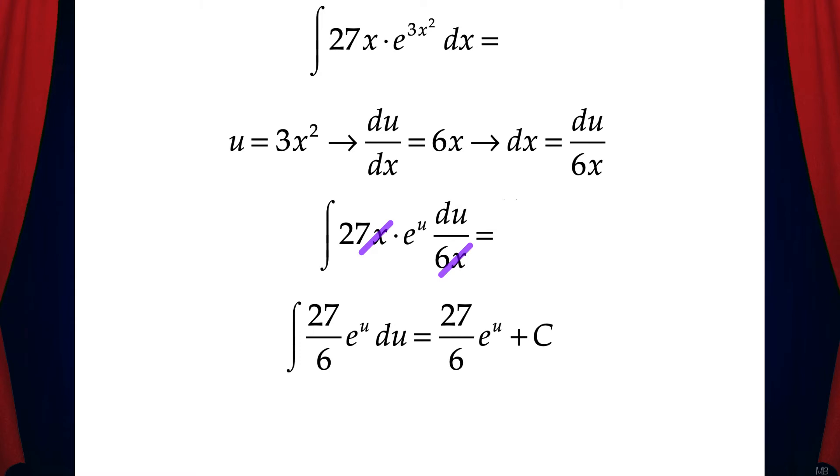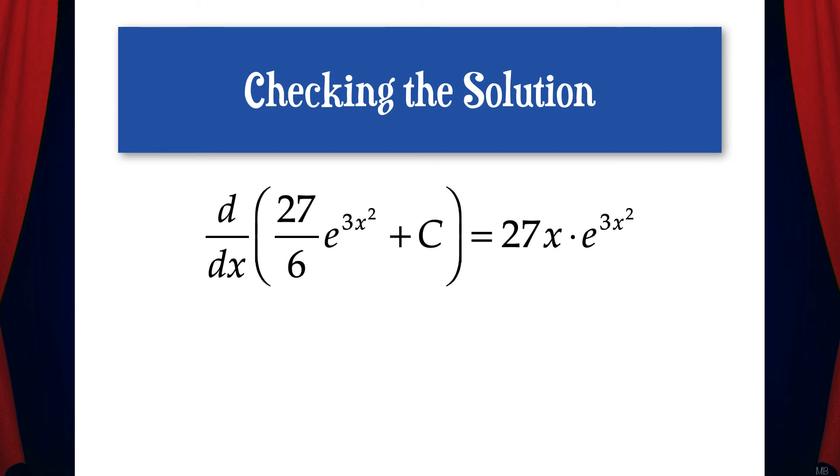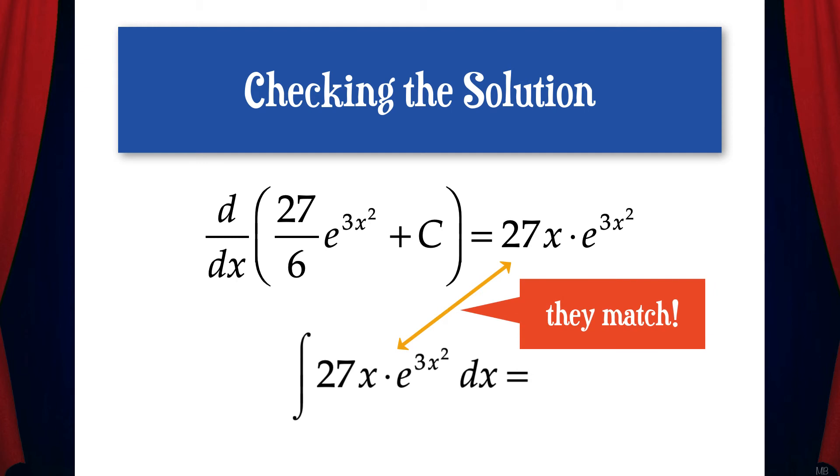Now let's get our solution back in terms of x. So in place of u, we'll write 3x squared. So our final solution is 27 over 6 e to the 3x squared plus c. Let's check to make sure this solution works. If we take the derivative of 27 over 6 e to the 3x squared plus c, we get 27x times e to the 3x squared, which is the original integrand. So we know this solution is correct.